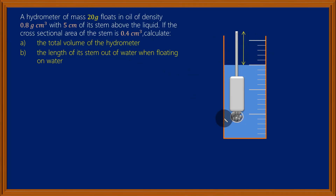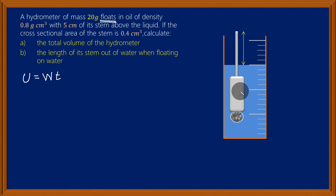I've drawn this diagram in order for us to understand this question. The first thing I want you to observe is that this object is floating in the liquid. When an object floats, the upthrust on it is equal to its weight in air. That's very important — upthrust is equal to its weight in air. That is why this hydrometer is floating. It means that there are two forces acting on it: one is its own weight, vertically downwards, and the other is the force exerted by the liquid on it, upwards, and that is the force we refer to as upthrust.